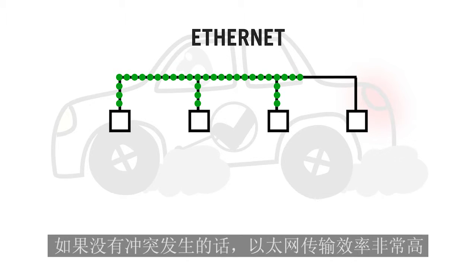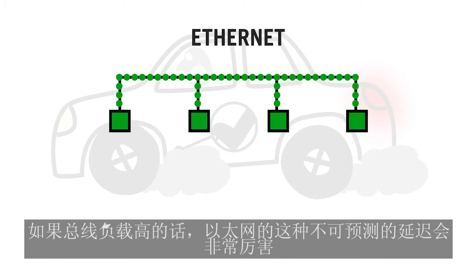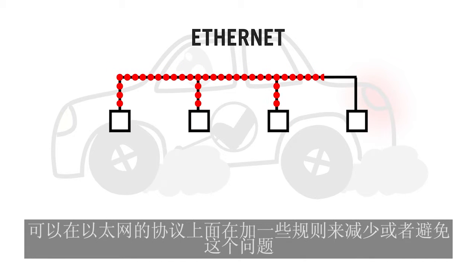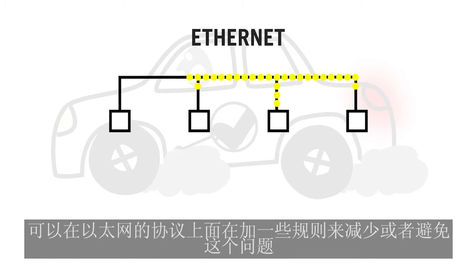Ethernet is very efficient as long as there is no collision. If the busload is high, the transfer delay can increase significantly due to collision. There are solutions where additional rules can be added on top of the Ethernet protocol to reduce or even remove this problem.